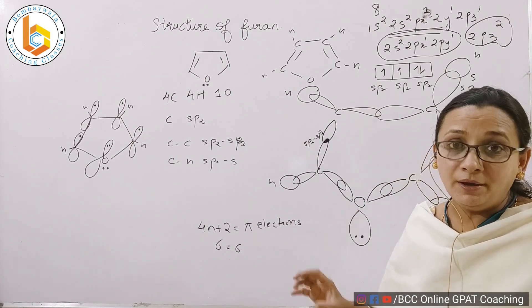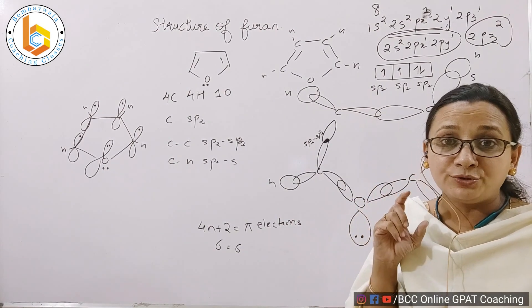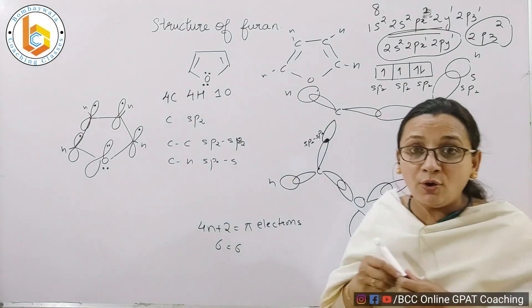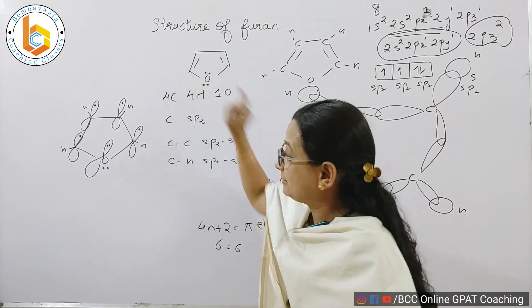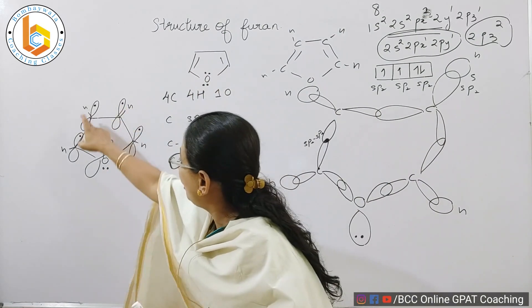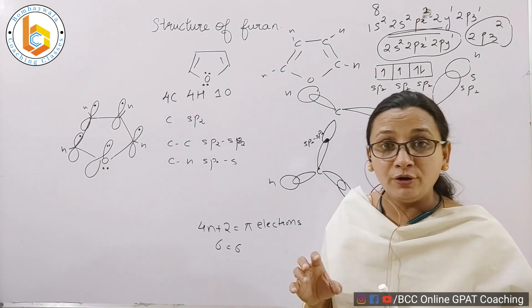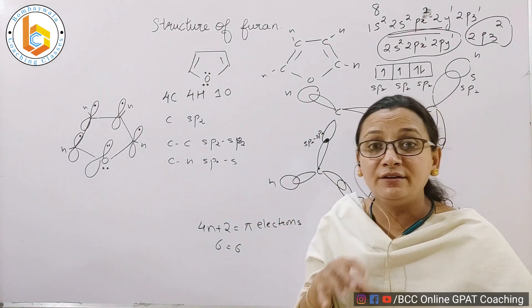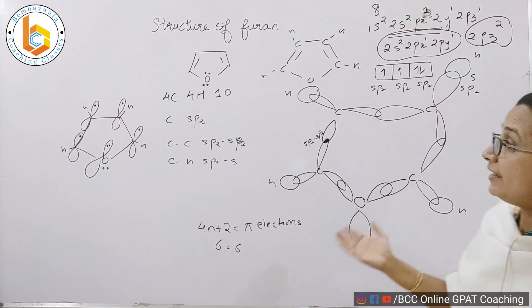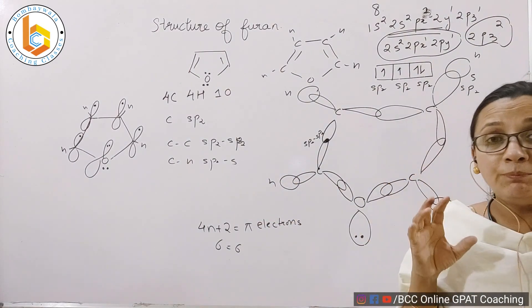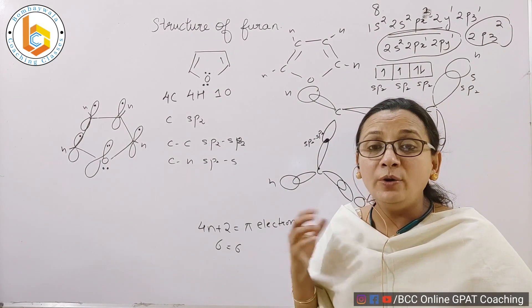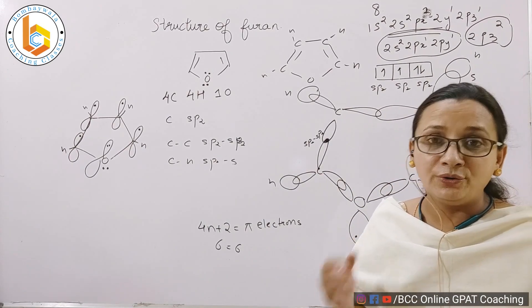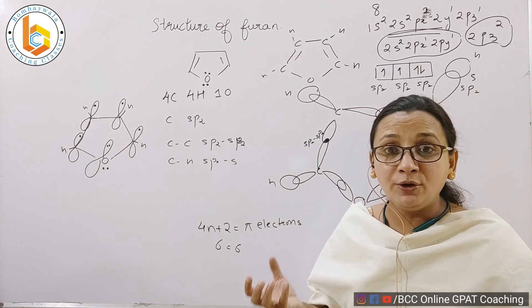The most important parameter you should remember is that in furan there are two pairs of electrons on oxygen. One pair of electrons is inside the plane participating in the resonance—you can see this pi electron cloud. Whereas one pair of electrons is lying just outside the ring, not participating in the resonance. This will explain how furan is going to react, whether it is going to be basic or not, and whether it is going to show electrophilic aromatic substitution. These questions will be answered because we understand the structure.